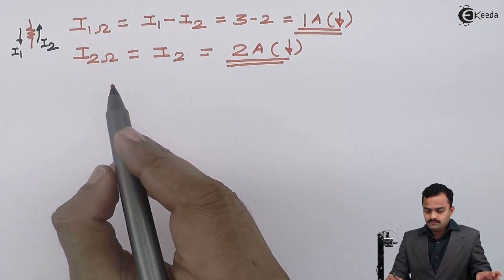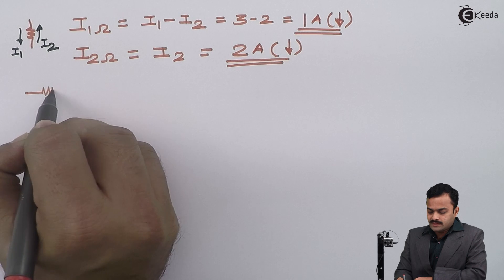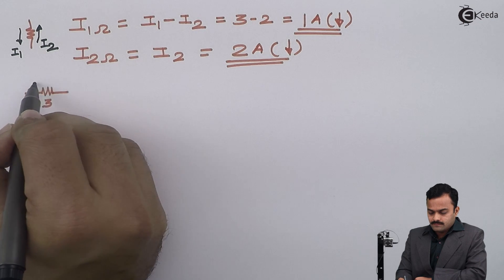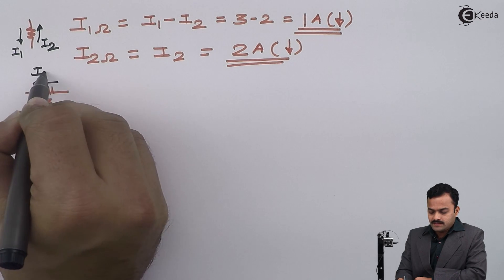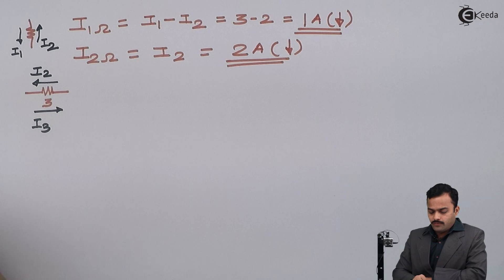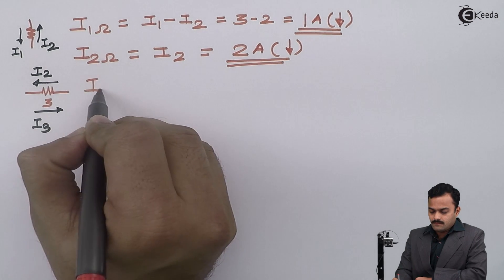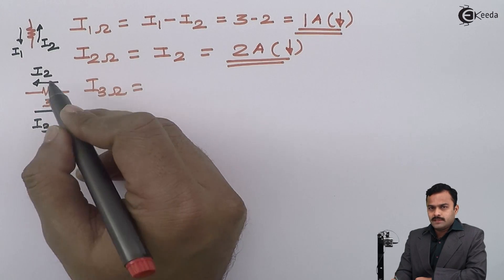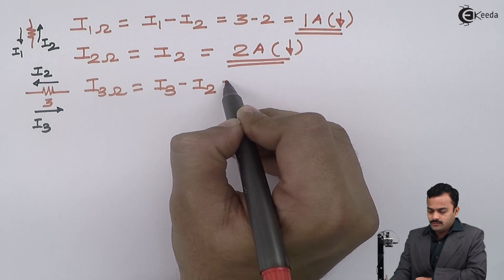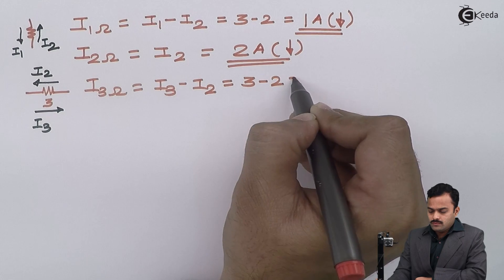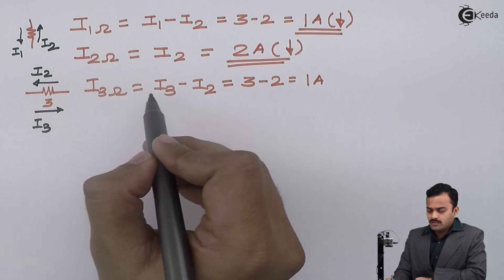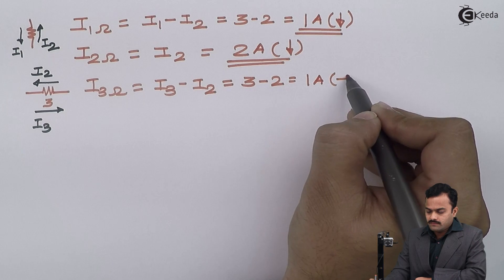For the 3Ω resistance, two currents are present: i2 flowing in one direction and i3 flowing in the other. Since i3 = 3A is greater than i2 = 2A, the branch current is i3 minus i2 = 3 minus 2 = 1 ampere, and the resultant current direction is the same as i3.